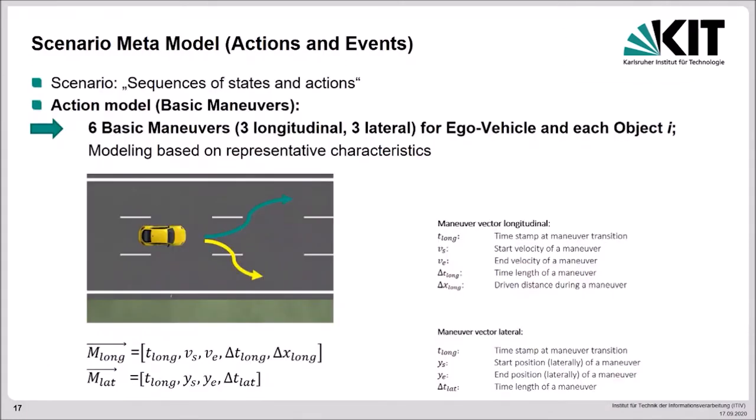My work and the following is based on the concept of basic maneuvers. So, how can this fit into the concept or how could we adapt a scenario metamodel which takes this into account? A scenario is defined as a sequence of states and actions. For the actions, we need a model based on the description of basic maneuvers. Let us stay with the example of a highway environment. Here we have six basic maneuvers: three in longitudinal and three in lateral direction as mentioned before, for each the ego vehicle and each agent or dynamic object.